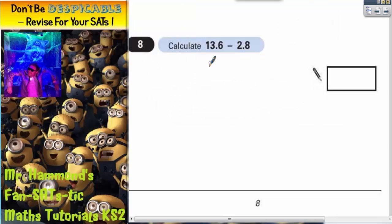Question 8, calculate 13.6 take away 2.8. Now this is an easy question to do providing that you don't try and do it in your head. You stay calm and use a simple column method subtraction.